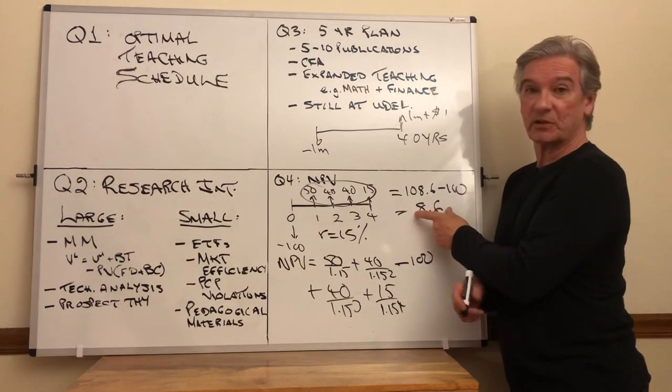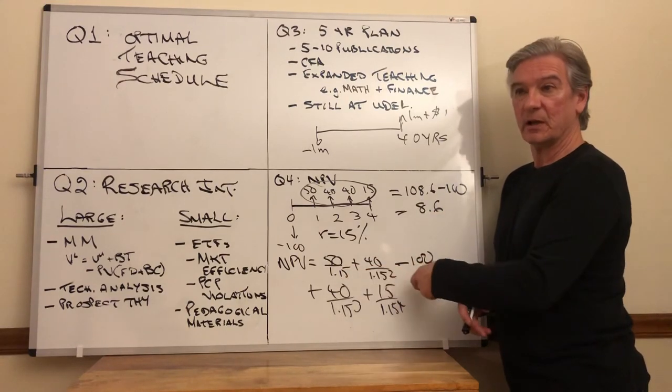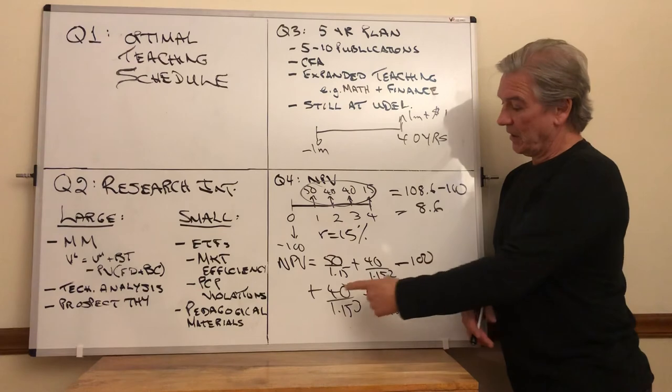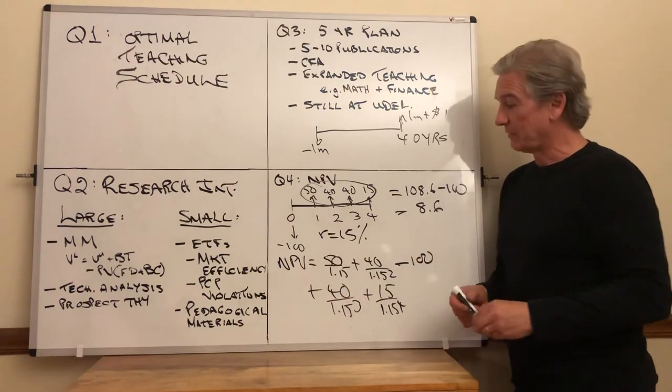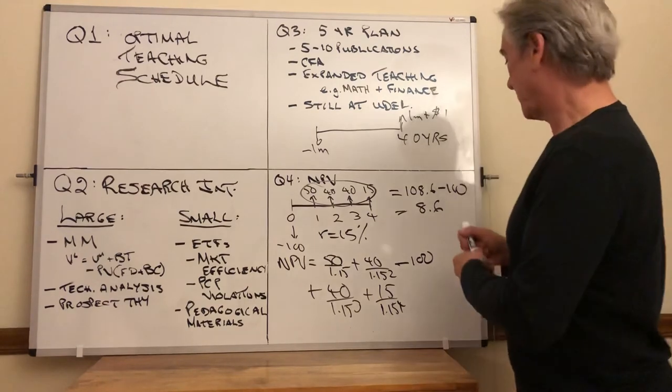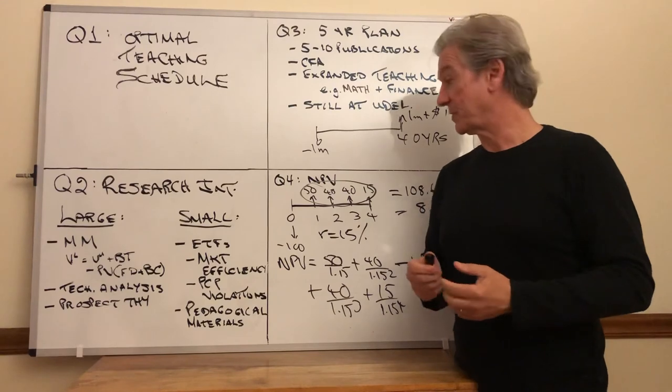If this was equal to zero, it would be irrelevant. You would have the same value as it costs. If this number was less than this number, it would be negative. You'd actually be losing value. So that's the basics of net present value.